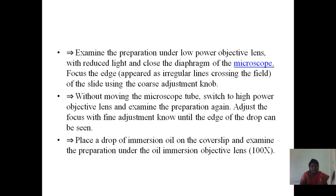Examine the preparation under the low power objective lens with reduced light and close the diaphragm of the microscope. Focus on the edge that appears at regular lines crossing the field of the slide using the coarse adjustment knob. Without moving the microscope tube, switch to the higher power objective lens and examine the preparation again. Adjust the focus with the fine adjustment knob until the edge of the drop can be seen. Place a drop of immersion oil on the coverslip and examine the preparation under the oil immersion objective lens at 100x magnification.